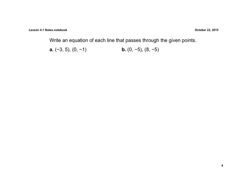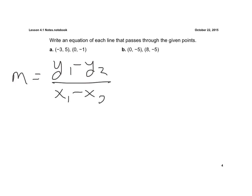Here, we're just given the two points. We're not given the graph. We know if we have two points, we can find the slope by using the slope formula: y1 minus y2 all over x1 minus x2. So in this case, it'd be 5 minus a negative 1, all over negative 3 minus 0.